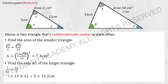For AC's length, unknown over 30 equals 12 over 5 — just compare the sides accordingly. You get AC as 31.2. So the same question solved with two different methods gives the same results.